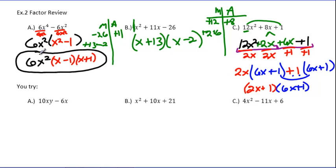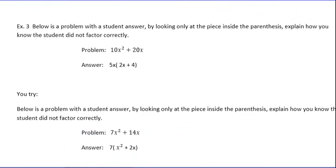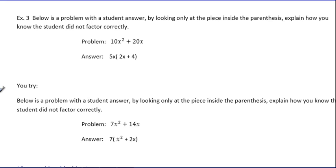So that's a quick little review of GCF factoring, easy trinomial factoring, and AC factoring. Last question we have here today. Notice it says below is a problem with the student answer. By looking only at the piece inside the parentheses, explain how you know the student didn't factor correctly. So we're being told to look specifically right here. How do we know they didn't factor correctly?